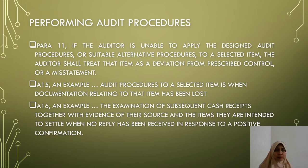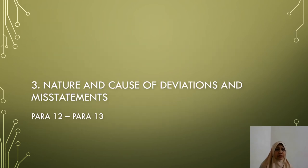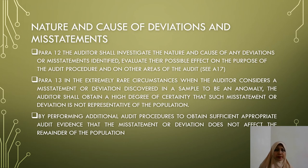Please recall the difference between positive and negative confirmation. The third requirement is the nature and cause of deviations and misstatements. Paragraph 12 states the auditor shall investigate the nature and cause of any deviations or misstatements identified, and evaluate their possible effect on the purpose of the audit procedure and on other areas of the audit.